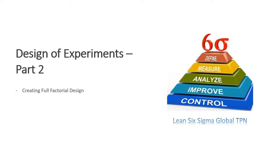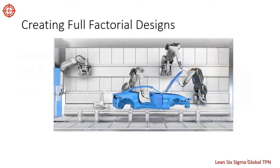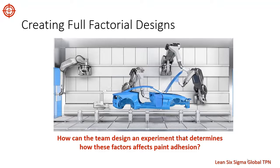Hello friends. Let's talk about creating full factorial designs. Let's get started. Recall the ABC company, a manufacturer of paints and primers. The process improvement team at the company wants to determine the primer type and spray pressure settings that maximize adhesion. How can the team design an experiment that determines how these factors affect paint adhesion?